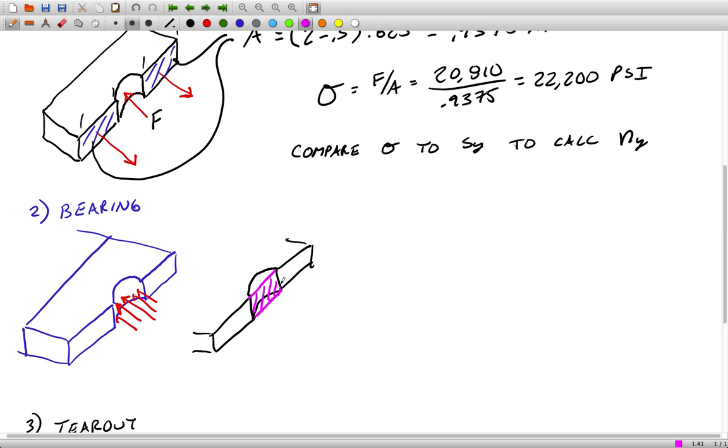If you just take a cut through the hole, that's the area that goes into a bearing calculation. So it's not the literal surface area of that semicircular section, it's the projection of it perpendicular to the plane of the force or the line of the force.